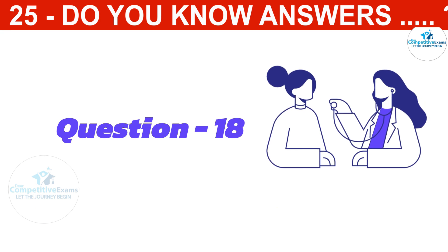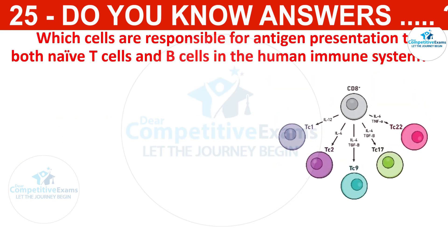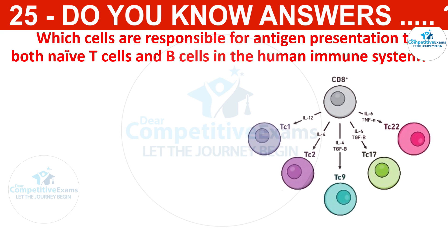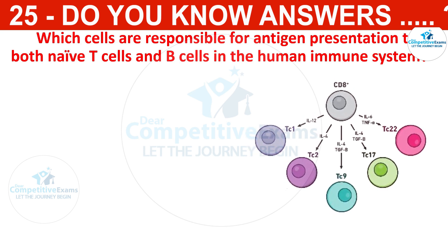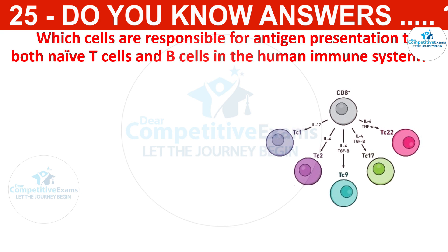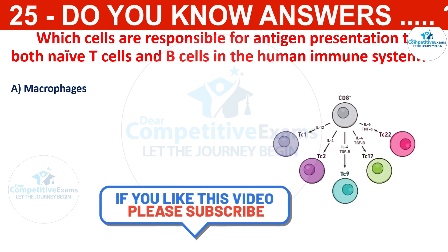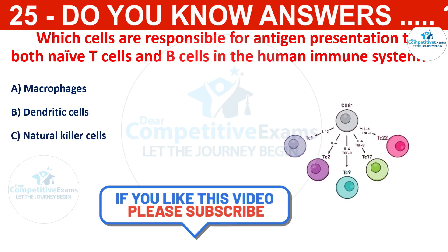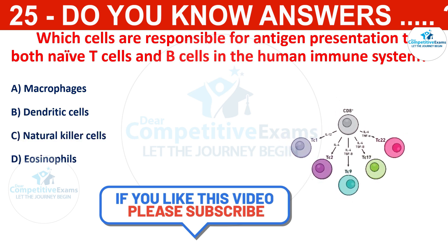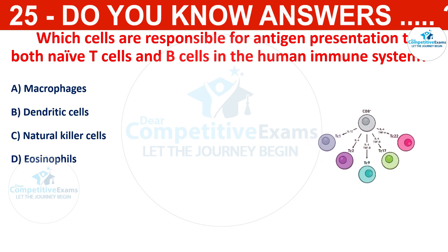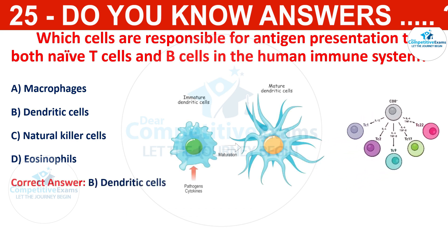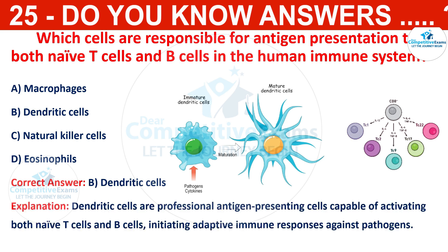Which cells are responsible for antigen presentation to both naive T cells and B cells in the human immune system? The options are macrophages, dendritic cells, natural killer cells, or eosinophils. The correct answer is dendritic cells. Dendritic cells are professional antigen-presenting cells capable of activating both naive T cells and B cells, initiating adaptive immune responses against pathogens.